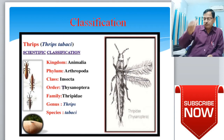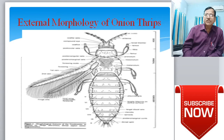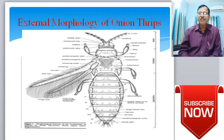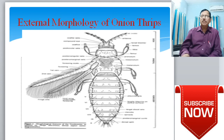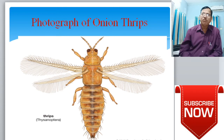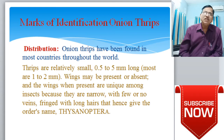From an external morphological point of view, the thrips body is divided into head, thorax, and abdomen — with head appendages, thoracic appendages, and abdominal appendages. This is also a photograph of the onion thrips, showing the body divided into three regions, with three pairs of legs and a pair of wings.